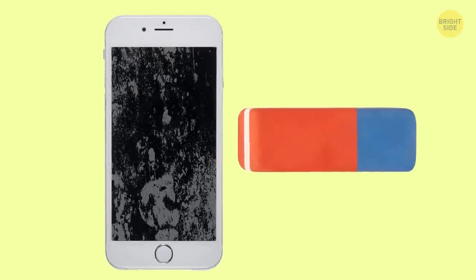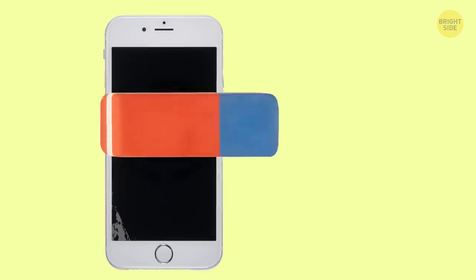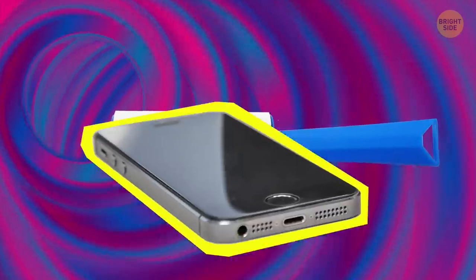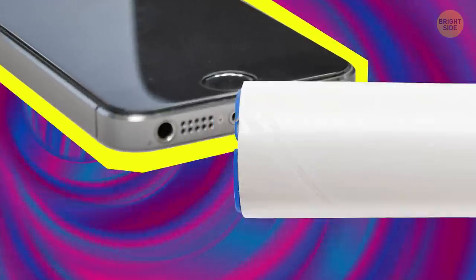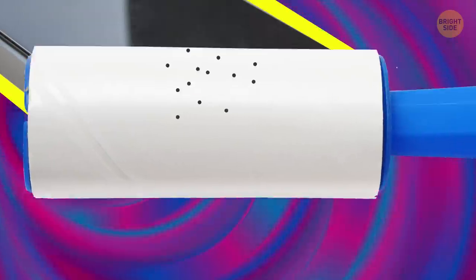A simple eraser will help you clean the phone screen, your earphones, and all the phone cords. A lint roller is perfect for cleaning your phone speakers. Roll it over the speakers and it'll take out all the dust.